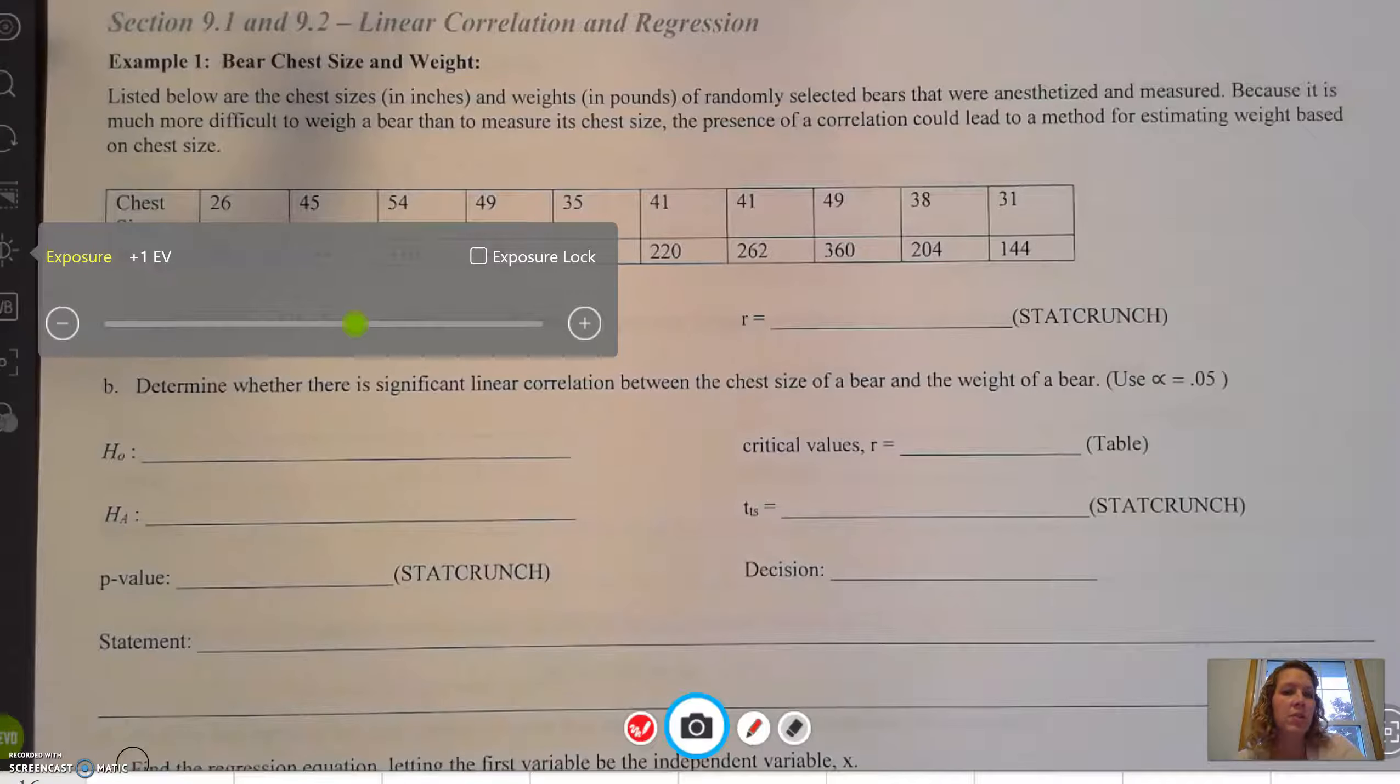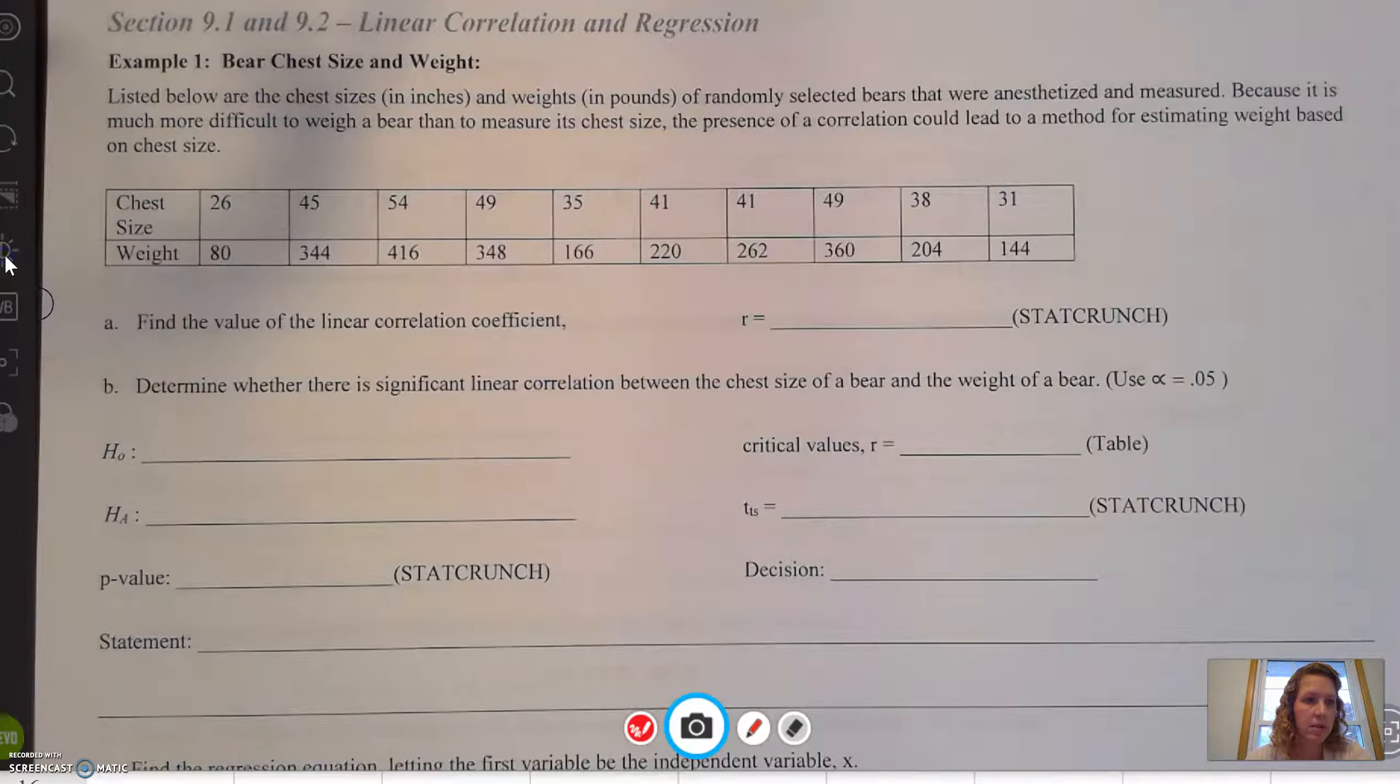Welcome to the example for linear correlation and regression about bear chest size and weight. Listed below are the chest sizes in inches and weights in pounds of randomly selected bears that were anesthetized and measured. Because it is more difficult to weigh a bear than to measure its chest size, the presence of a correlation could lead to a method of estimating weight based on chest size.